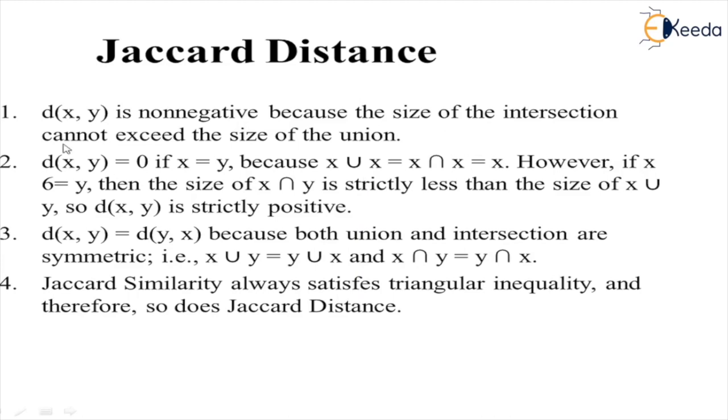Distance between x and y is 0 if x equals y, because x union x and x intersection x is equal to x only. We are actually performing the intersection and union with the same set.